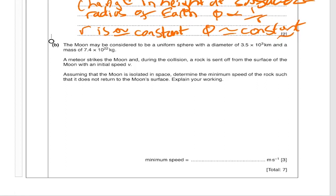The last part of this question, for three marks, caught a lot of people out. The Moon may be considered to be a uniform sphere with a diameter of 3.5 times 10 to the 3 kilometres and a mass of 7.4 times 10 to the 22 kg. A meteor strikes the Moon and a rock is sent off from the surface with initial speed V. Determine the minimum speed of the rock so that it does not return to the Moon's surface. Where people got into difficulty is they assumed the rock was moving in circular motion — it's not. This is about the escape velocity.